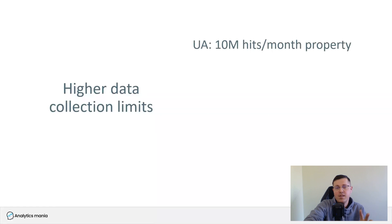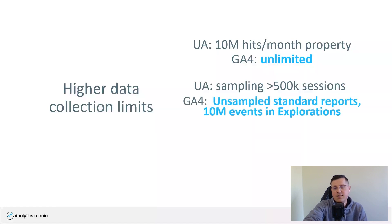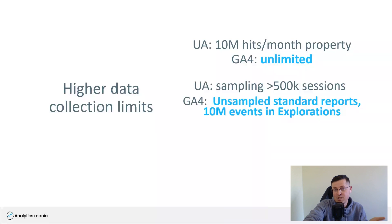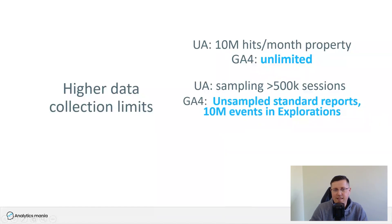In Universal Analytics you had a 10 million hits per month limit per property, and in GA4 that is unlimited. When it comes to sampling, in Universal Analytics sampling kicked in when you were working with over 500,000 sessions. In GA4, standard reports are unsampled, and when working with explorations, sampling kicks in at around 10 million events in a single exploration. For most smaller and medium businesses, that 10 million event threshold will be higher than the old 500,000 session limit.